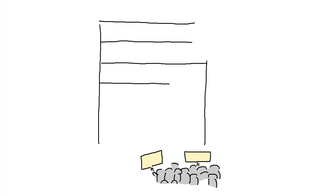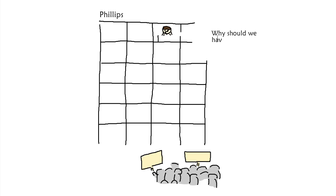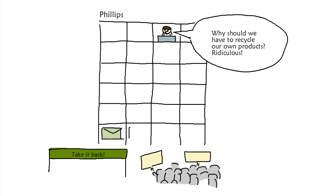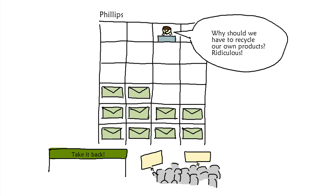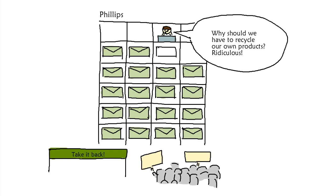We know this kind of pressure works. Not long ago, the electronics brand Philips actively lobbied against laws that would make them responsible for recycling their own products. They were then swarmed with 47,000 angry emails from the public through a Greenpeace campaign. The pressure was so strong, they had no choice but to drastically re-evaluate and start taking responsibility for their own e-waste.